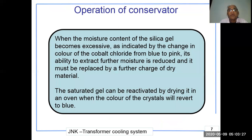When the moisture content of the silica gel becomes excessive — as indicated by the change in color of the cobalt chloride from blue to pink — its ability to extract further moisture is reduced and it must be replaced with a fresh charge of dry material. The saturated gel can be reactivated by drying it in an oven, after which the color of the crystals will revert to blue.